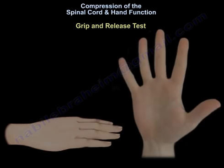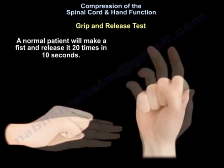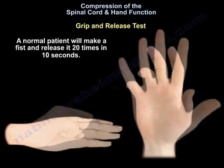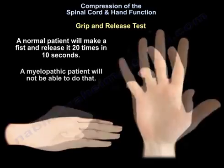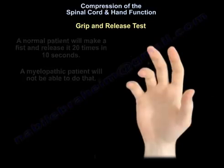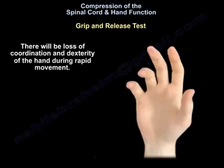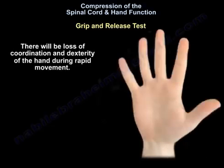Regarding the grip and release test, a normal patient will make a fist and release 20 times in 10 seconds. A myelopathic patient will not be able to do that. In a positive grip and release test, the patient has trouble making a fist and fully extending the fingers, with loss of coordination and dexterity during rapid movement.